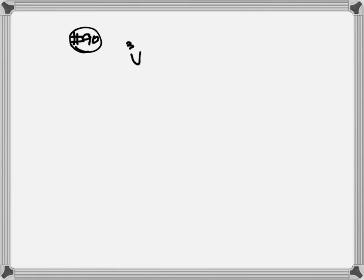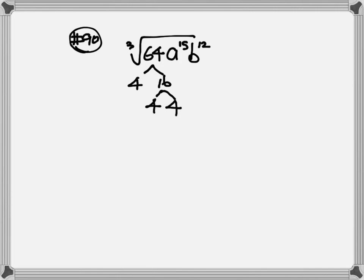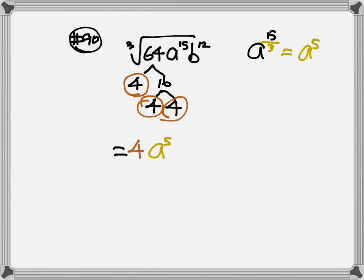Number 90: we have cube root of 64a¹⁵b¹². The little 3 tells us we're looking for three identical numbers. For 64, use 4: 4×16, and 16 is 4×4 — three 4s — so one 4 goes out. For a¹⁵: divide by 3 gives a⁵, so all the a's go out. For b¹²: divide by 3 gives b⁴, so all the b's go out. The answer is 4a⁵b⁴.